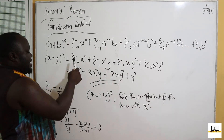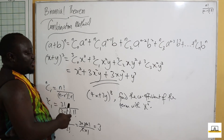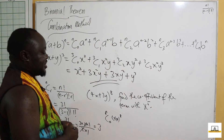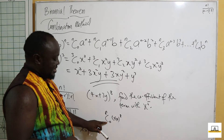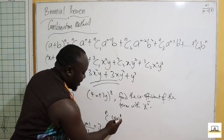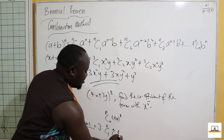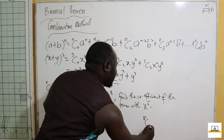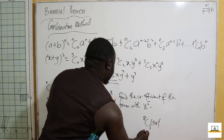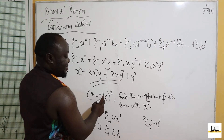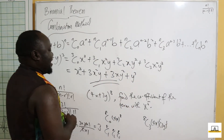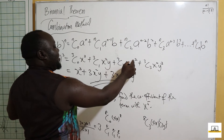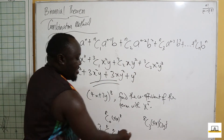Remember that 3 combination 0 gave the first term x³. So in this case, 8 combination 0 gives the first term (4x) raised to the power 8. If I want (4x) raised to the power 5, then: 8 combination 0 gives power 8, 8 combination 1 gives power 7, 8 combination 2 gives power 6, and 8 combination 3 gives power 5. So x raised to the power 5 corresponds to 8 combination 3. The remaining power for 3y is 8 minus 5 equals 3, so 3y is raised to the power 3. Note that the exponents always sum to the original power — 5 plus 3 equals 8.